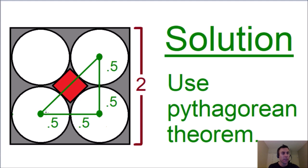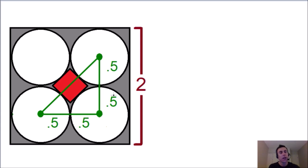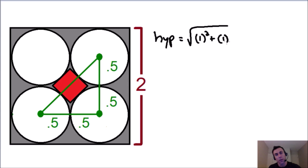Now we can use this information to find the distance of the hypotenuse of this right triangle. Let's use the Pythagorean theorem. The bottom leg of this right triangle is equal to 1.5 plus 0.5, which is equal to 1 — we'll call that side A. The right leg is also equal to 1 — we'll call that side B. The hypotenuse is equal to the square root of A squared plus B squared, so the square root of 1 squared plus 1 squared, which equals the square root of 2.